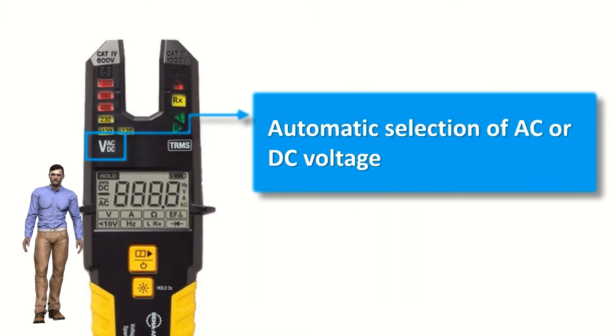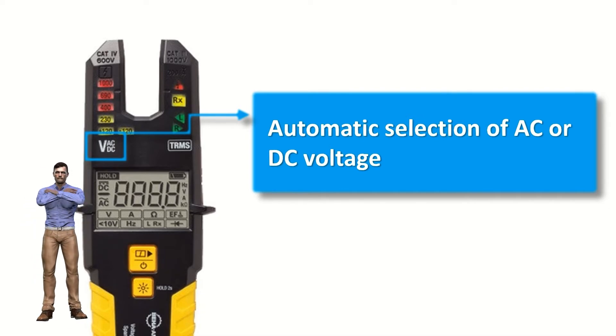For easy use, the clamp automatically detects between AC and DC voltage, so you can't go wrong. The clamp will show the AC or DC symbols, as appropriate, and in the latter case, also the positive or negative sign, according to the placement of the test leads.